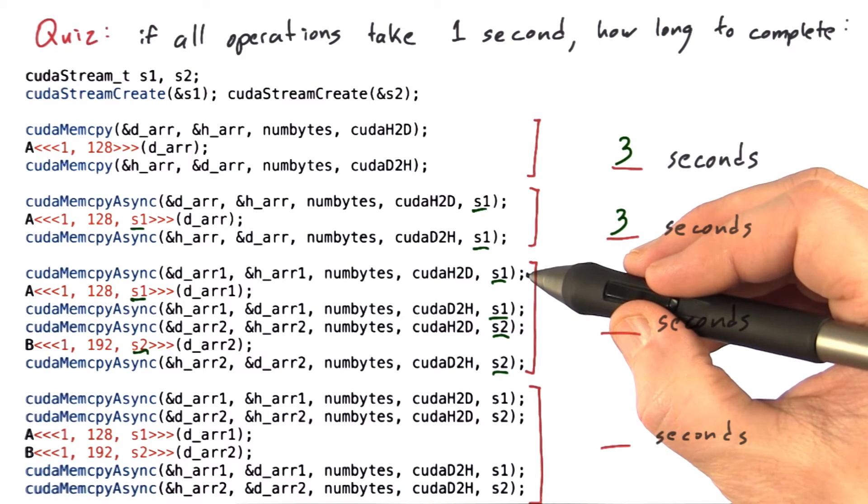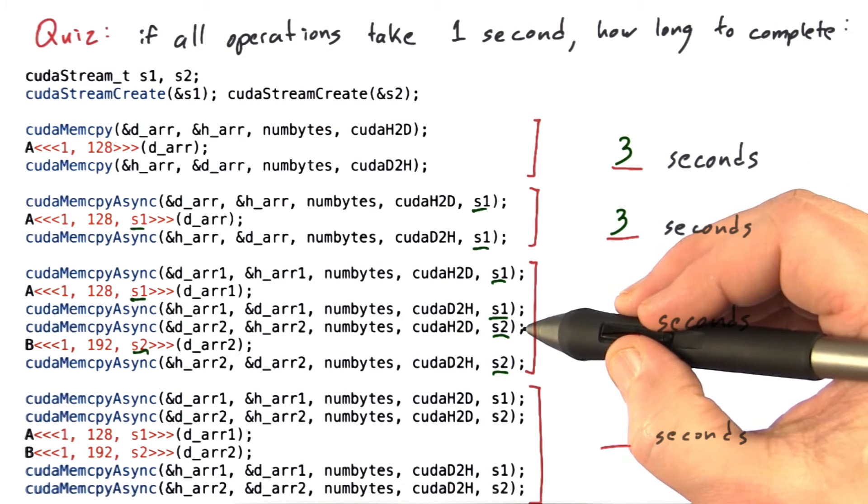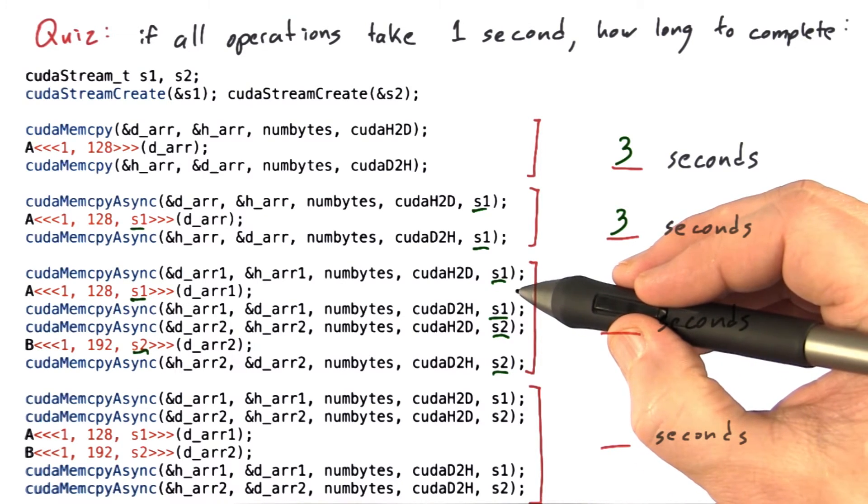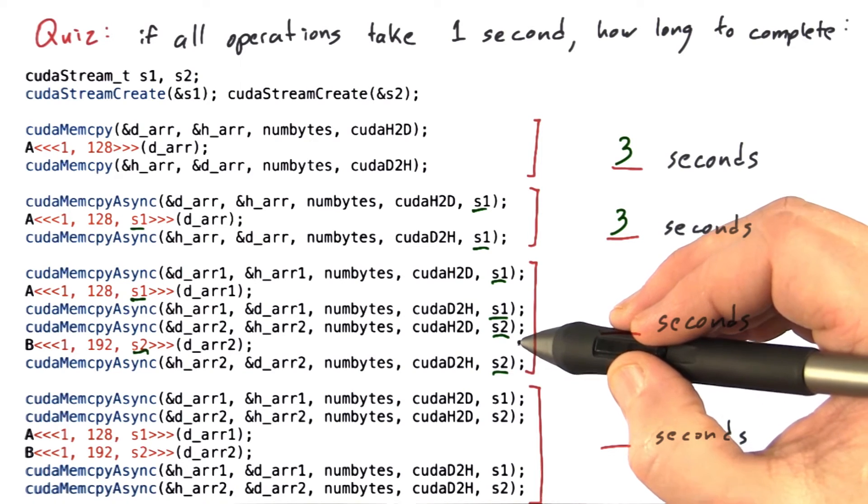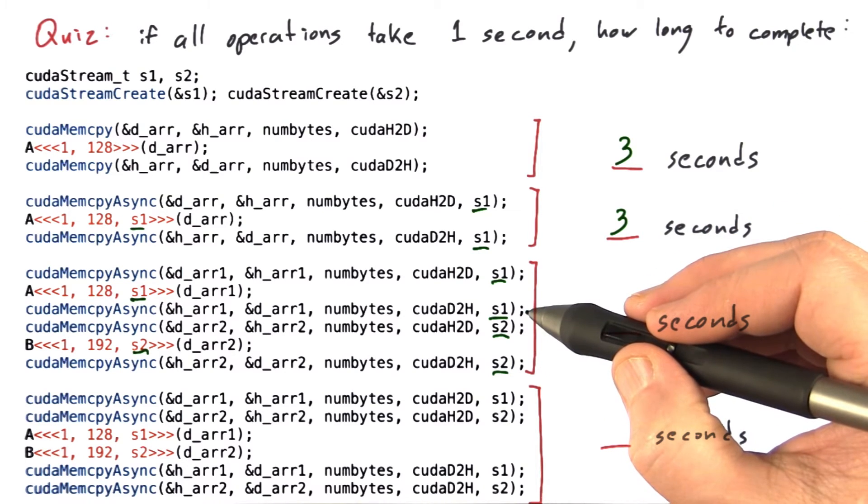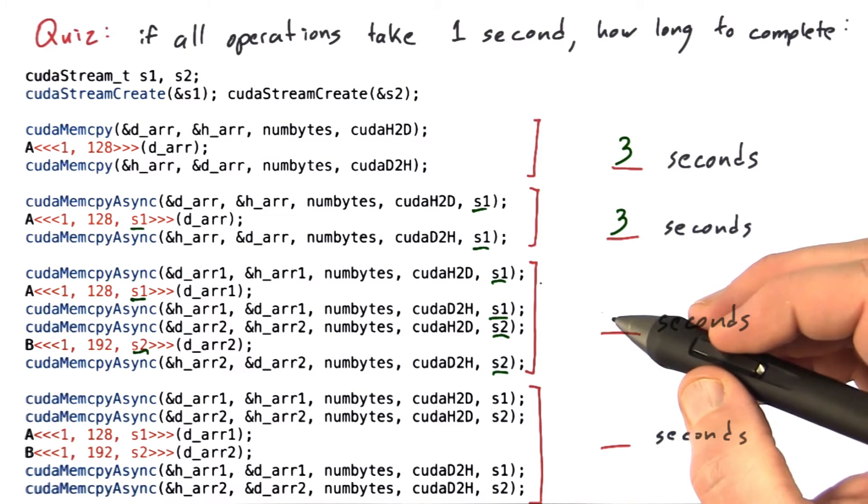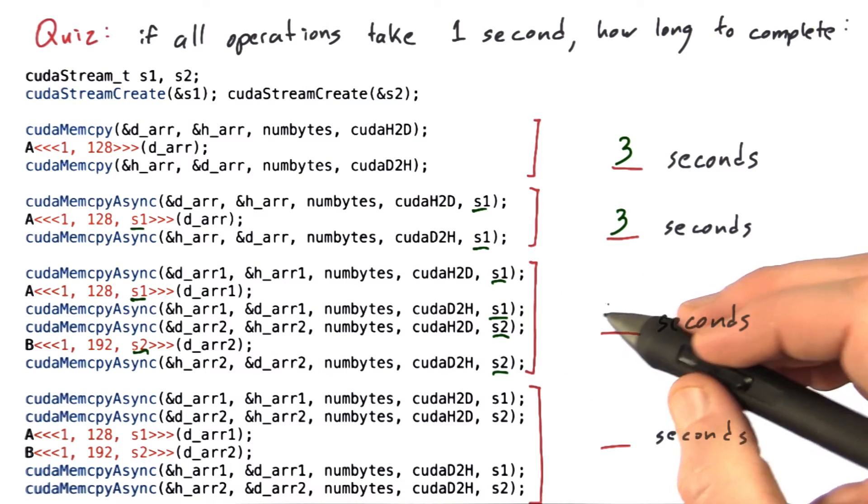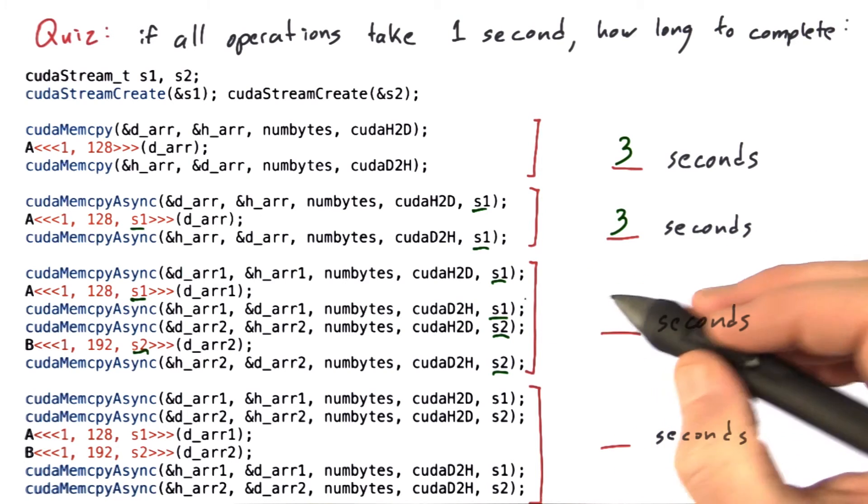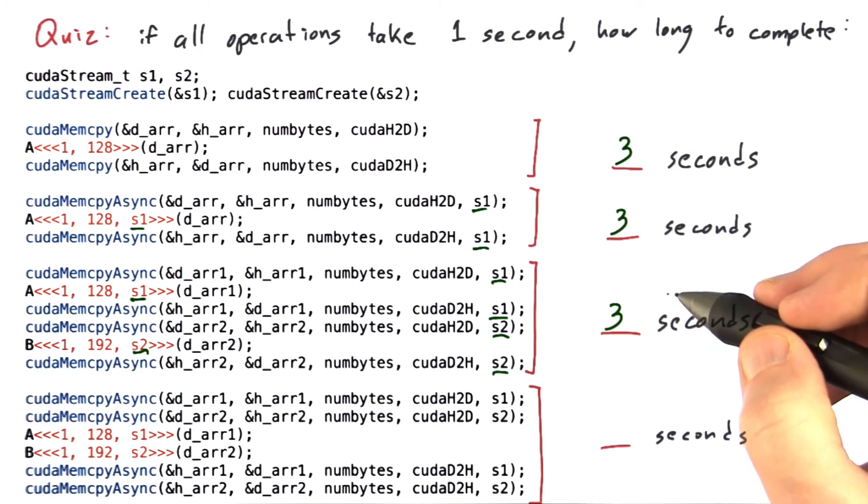So in the first second, this memcopy and this memcopy will be running. In the next second, kernel A will be running and kernel B will be running. And in the final second, the return memcopy will be running in S1, and the return memcopy will be running in S2. The minimum amount of time this can take, if all of the operations that can run concurrently do run concurrently, will again be three seconds.